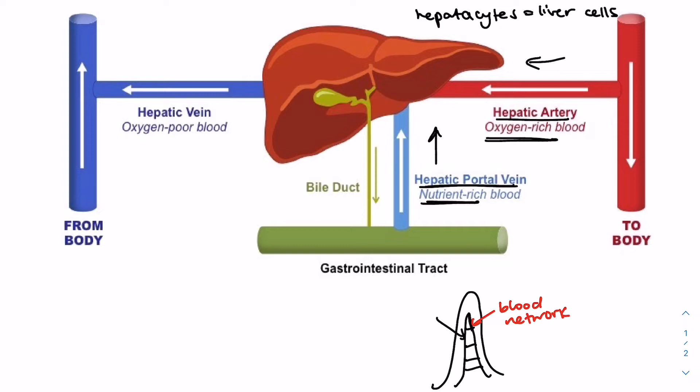So this nutrient-rich blood in the villus is what eventually forms a vein and then moves into the liver.